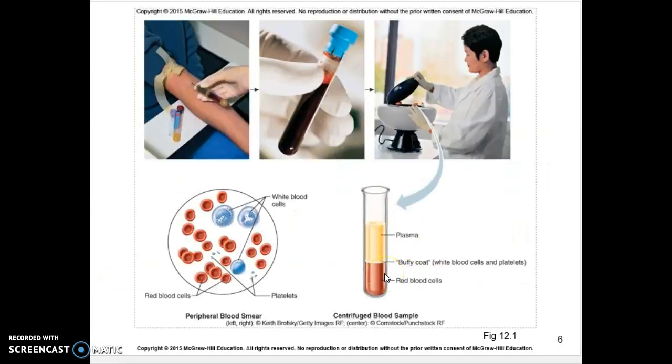If we were to spin it out and get all their separate parts out, you would see that the red portions are very heavy, so it would drop towards the bottom. We get this little middle section called the buffy coat, and we get this little yellowish clear portion towards the top that is plasma, which is mostly water.